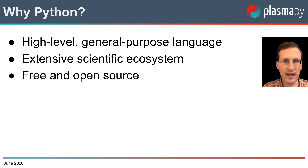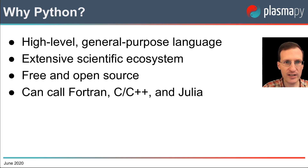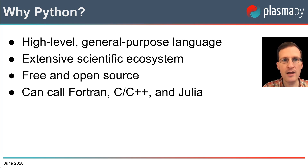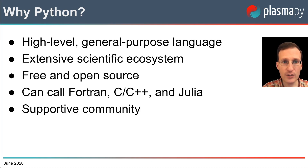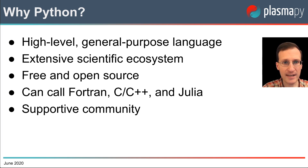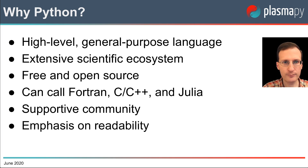Python acts as glue since it can connect software written in a variety of languages. Within Python, we can call routines written in established languages like Fortran, C, and C++, as well as newer languages like Julia. The scientific Python community is highly supportive, which means there are places to go to ask for help. The culture within the Python community encourages crafting clean, reusable, and especially readable code.